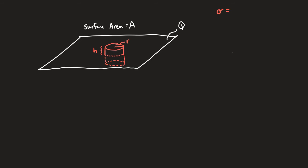Let's say the sheet has charge Q and surface area A. The cylindrical Gaussian surface has a top with radius r and a total height of 2h, so the amount above and below is h. We start by recognizing a charge density of σ = Q/A around the sheet. Step two is to calculate the electric field using Gauss's law, assuming the sheet is very large compared to the separation distance.